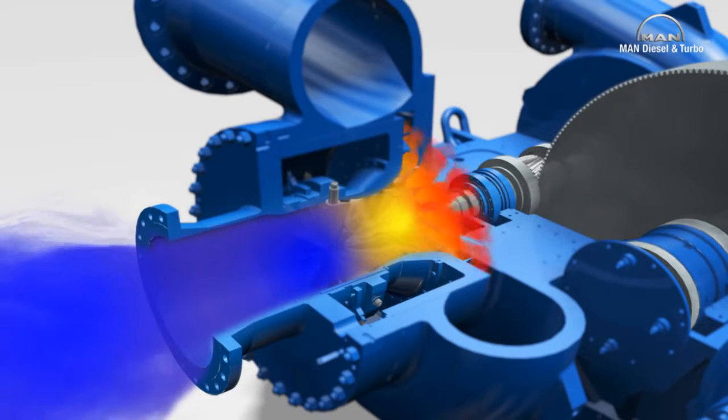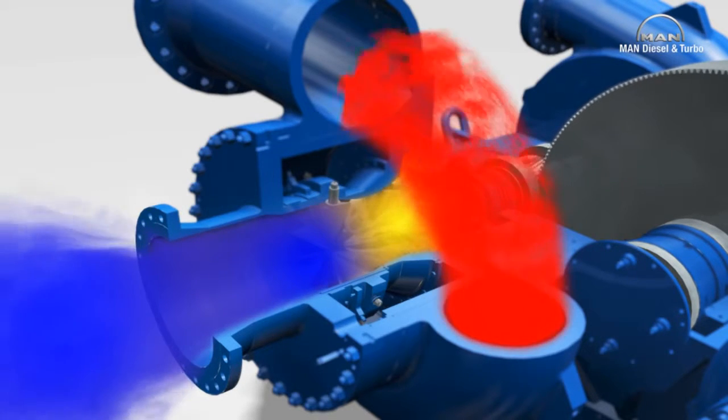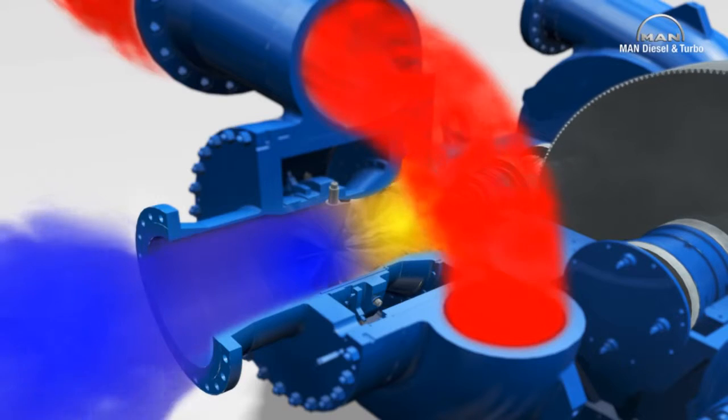Centrifugal force works here in the same way as with a roundabout, and accelerates the gas radially in the blade channels, that is to say from inside to outside. This provides the gas with kinetic energy, which is transformed into pressure energy in the impeller and diffuser. The volute then collects the gas.